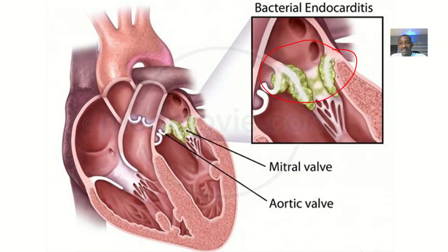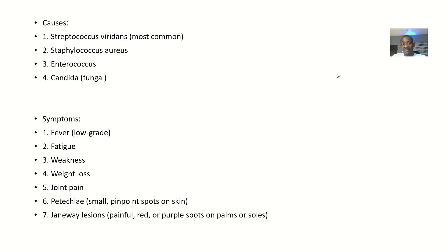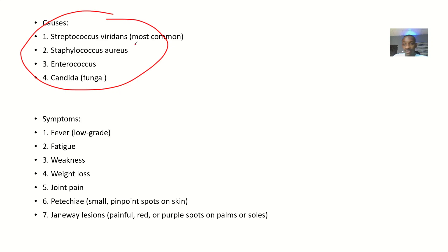Subacute bacterial endocarditis has a subacute onset. The causative organisms include Streptococcus viridans, which is at the top of the list, Staphylococcus aureus, Enterococcus, and Candida, which is a fungal organism. All of these have the potential to cause infection in the heart.